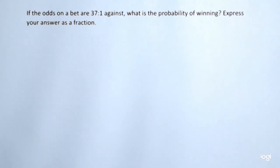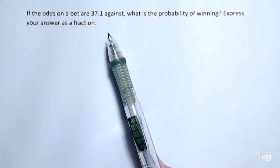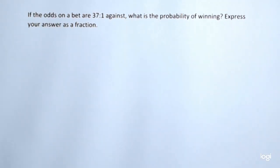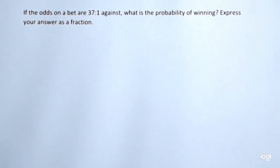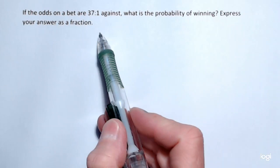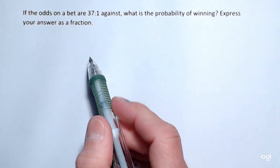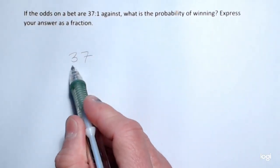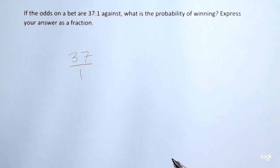So we have 37 to 1 against, so we could convert this to a probability by using the expected value equation, but I'm just going to set this up as a proportion problem. If we have 37 to 1 against, I can write this as a fraction, 37 to 1, like so.